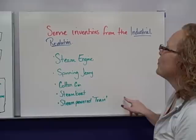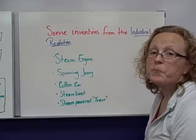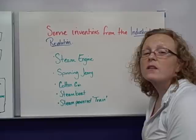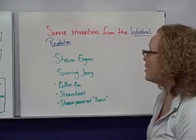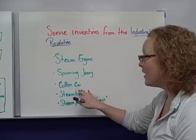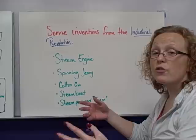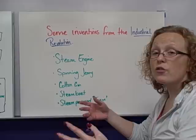Some inventions from the Industrial Revolution include the steam engine, the spinning jenny, the cotton gin, the steamboat, and the steam-powered train. We don't necessarily use these exact inventions today, but we see their effects — mass production of clothing, cotton being spun, and the cotton gin taking seeds out of cotton. All of this has been revamped in today's society through our trains, planes, and automobiles. There was also a second Industrial Revolution that really affected everything after World War I.